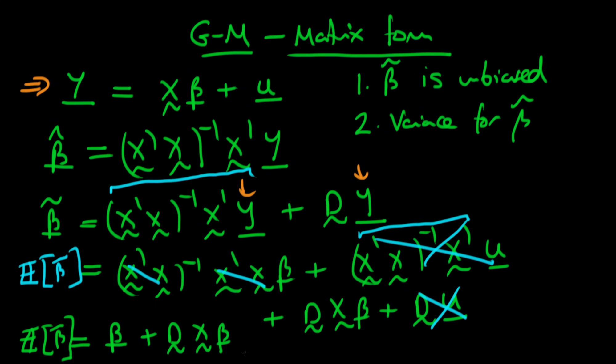That's our form for our expectation of beta tilde. In the next video we're going to show the conditions for beta tilde to be unbiased and then we're going to find the variance for that particular estimator under those conditions. I'll see you then.